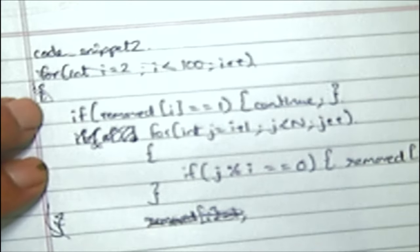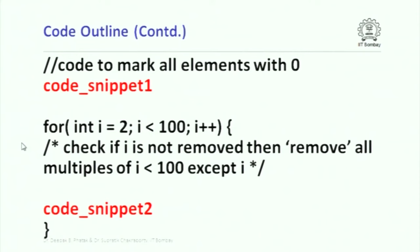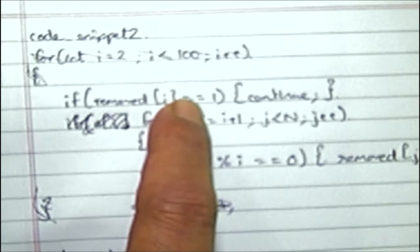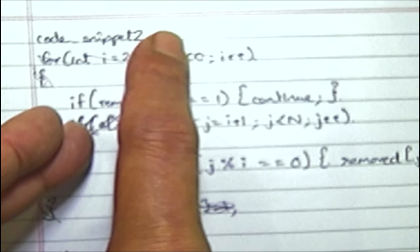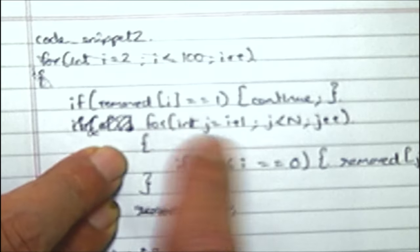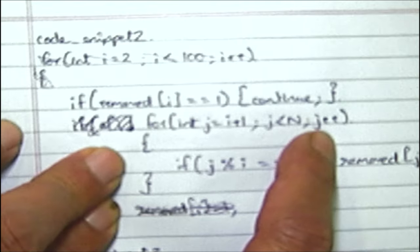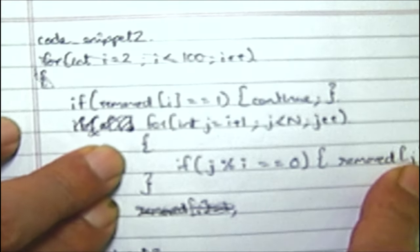Here is another solution by Nikhil — this is code snippet 2. Please note the outer iteration is already set in the problem: for int i equal to 2, i less than 100, i++. Your code snippet assumes some value of i at this point. If the ith element itself has been removed, simply say 'continue' — meaning skip this i and take the next element. But if i is not removed, then all multiples of i among subsequent numbers must be removed. The inner iteration runs for j equal to i plus 1 to n. If j modulo i is 0, the jth value is marked as removed. This will also work correctly.